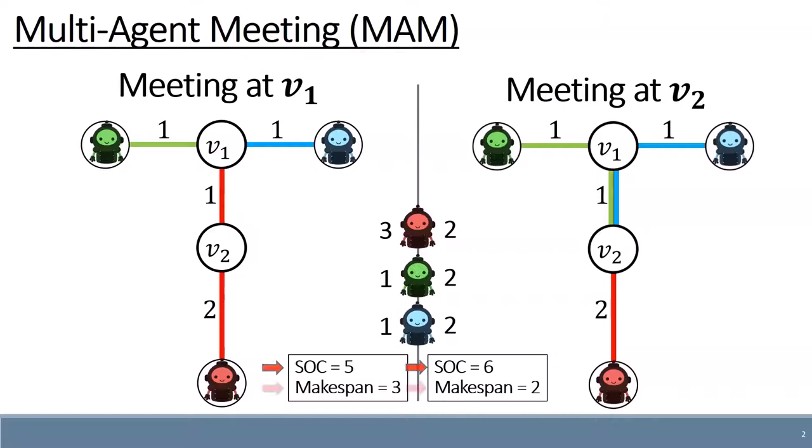And makespan, which is the cost of the longest path to the meeting location. In this example, we can see that v1 has lower sum of cost, while v2 has lower makespan.